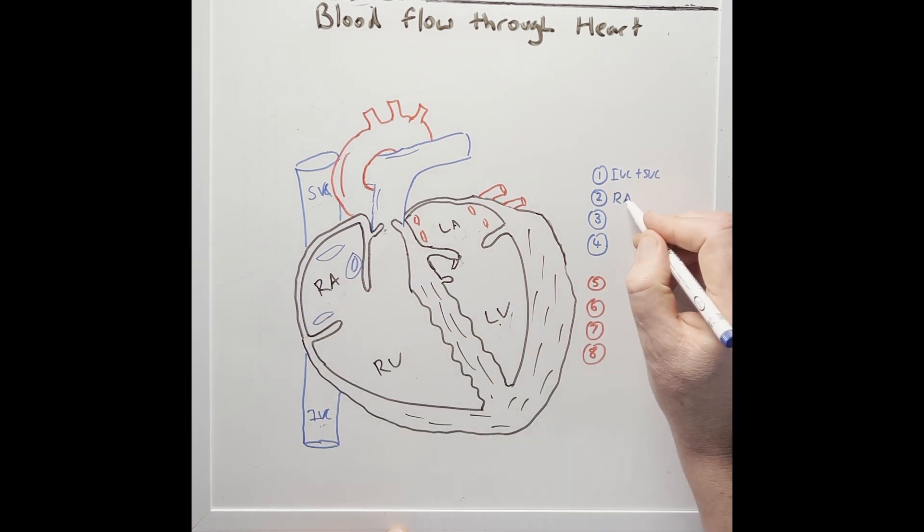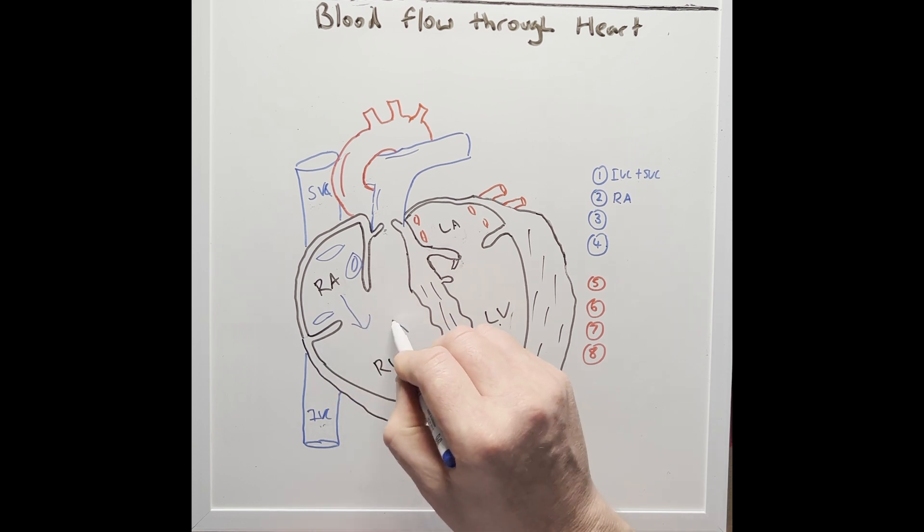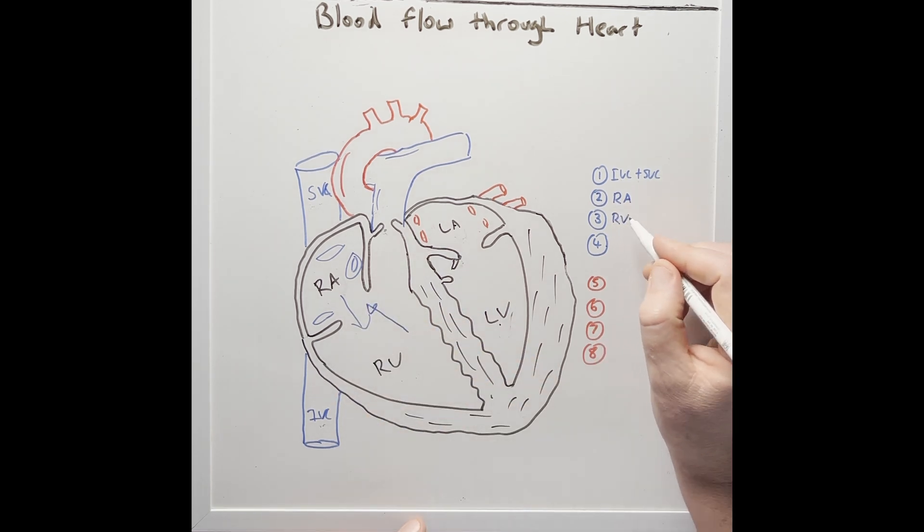So that's step two. Blood then goes into the right ventricle through a valve called the tricuspid valve. This valve is here to prevent blood going backwards. So that's number three, the right ventricle.